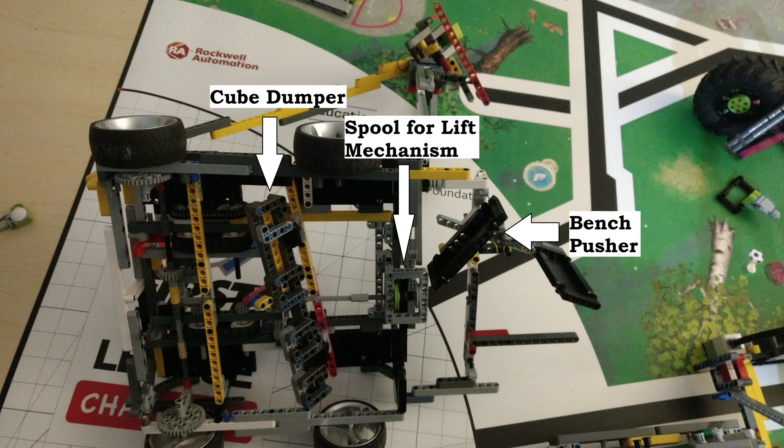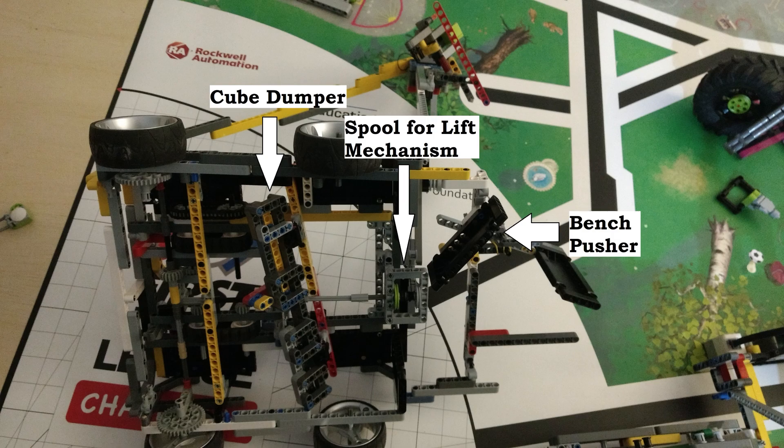Here is a bottom view of the attachment. So on the very bottom, the middle of the attachment roughly, there are these four containers that would hold the cubes that go into the bench. These will then dump the cubes out into the spaces of the bench. There's also a spool which controls the lift mechanism, and then there's a bench pusher which will flip the bench down as the robot drives forward.